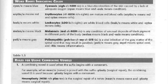Tables 1.2 and 1.3 deal with word roots and the rules for using combining vowels. In Table 1.2, you'll see word roots indicating color: cyan/cyano meaning blue, eryth/erythro meaning red, leuk/leuko meaning white, melan/melano meaning black, and poli/polio meaning gray.